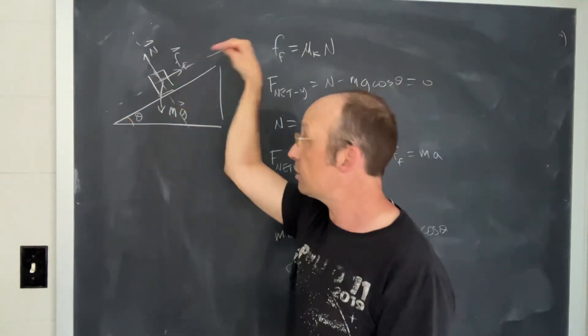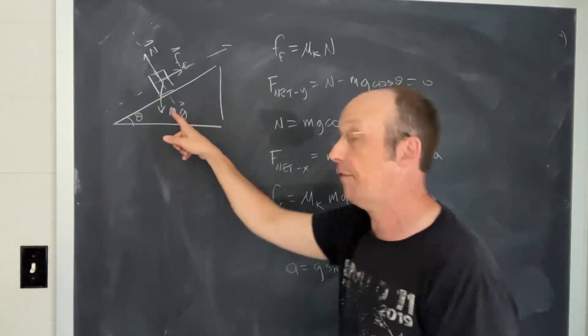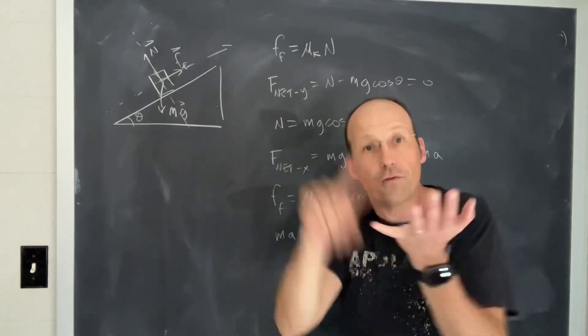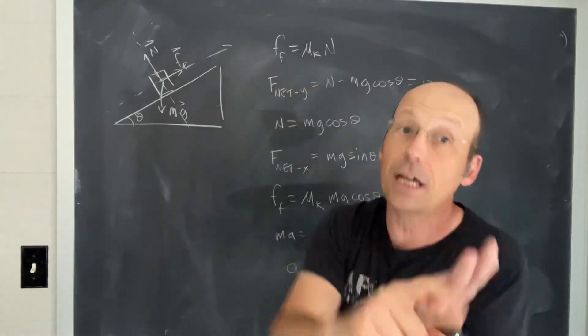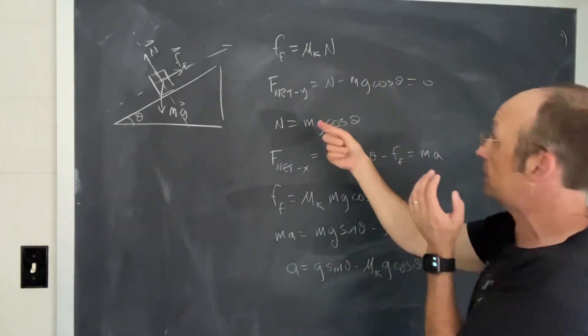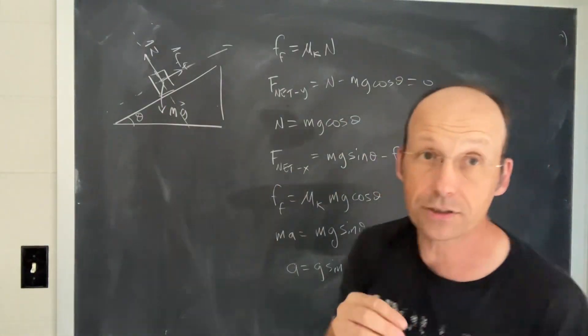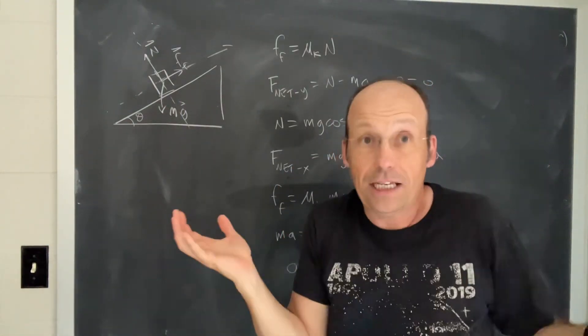Now, in this direction, going down the slide, I have a component of the weight also, which depends on the mass. So if you put all that together, the friction force depends on the mass, the acceleration depends on the mass, because of Newton's second law, F net equals mass times acceleration. So the mass just cancels out.